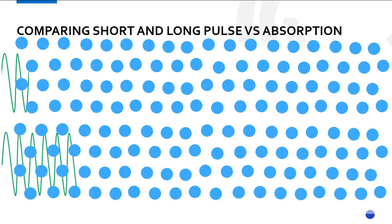The first thing we're going to do is compare pulse lengths. In this example, the blue dots represent water and oxygen molecules in the atmosphere, and the green lines are your pulses. In this case, they're supposed to represent X band — the three centimeter radar.